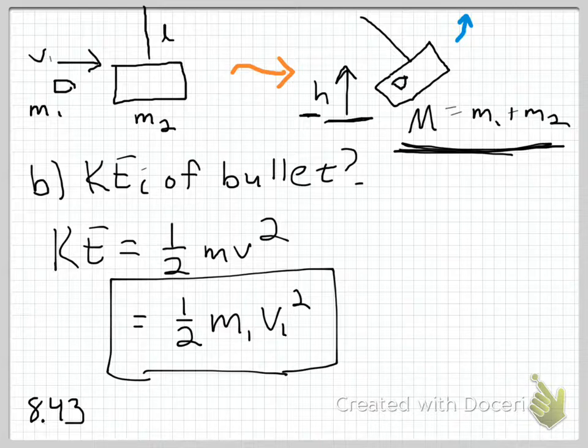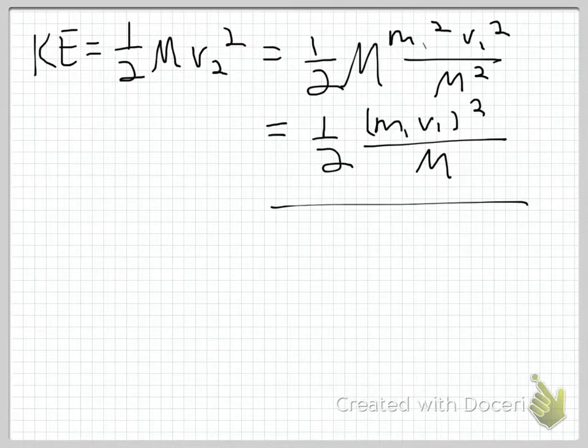Now you've got to be careful here. Notice there's no friction. There is going to be a tension in this string, but if you notice, it's always perpendicular to the velocity of this pendulum. In other words, it's not going to do any work on the pendulum, because a force that's orthogonal to a displacement does no work. So we can use conservation of energy here extremely well.